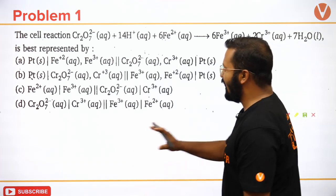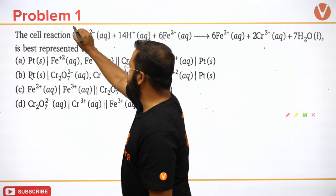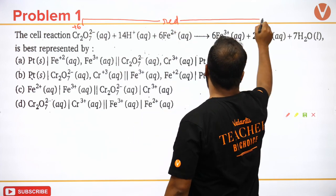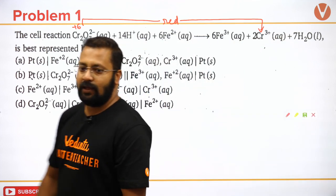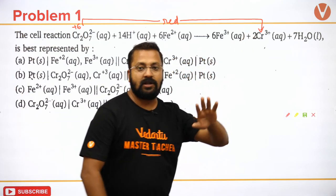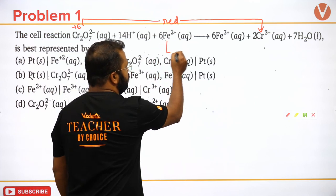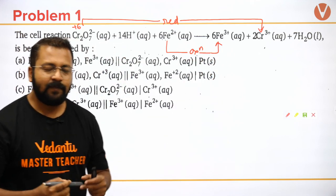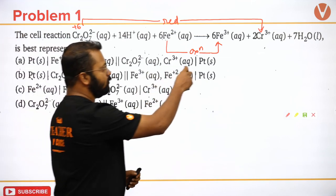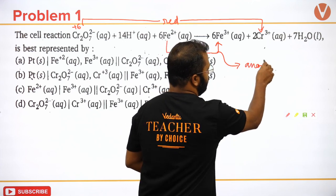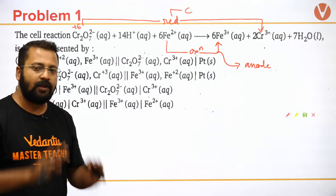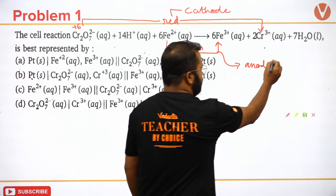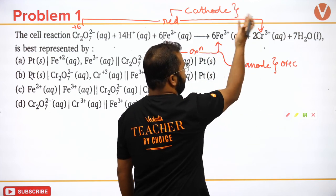Let's look at what is happening. Chromium's oxidation state changes from +6 to +3, so chromium is undergoing reduction. Iron changes from Fe²⁺ to Fe³⁺, so iron is undergoing oxidation. Wherever oxidation takes place, that is the anode. Wherever reduction takes place, that is the cathode.